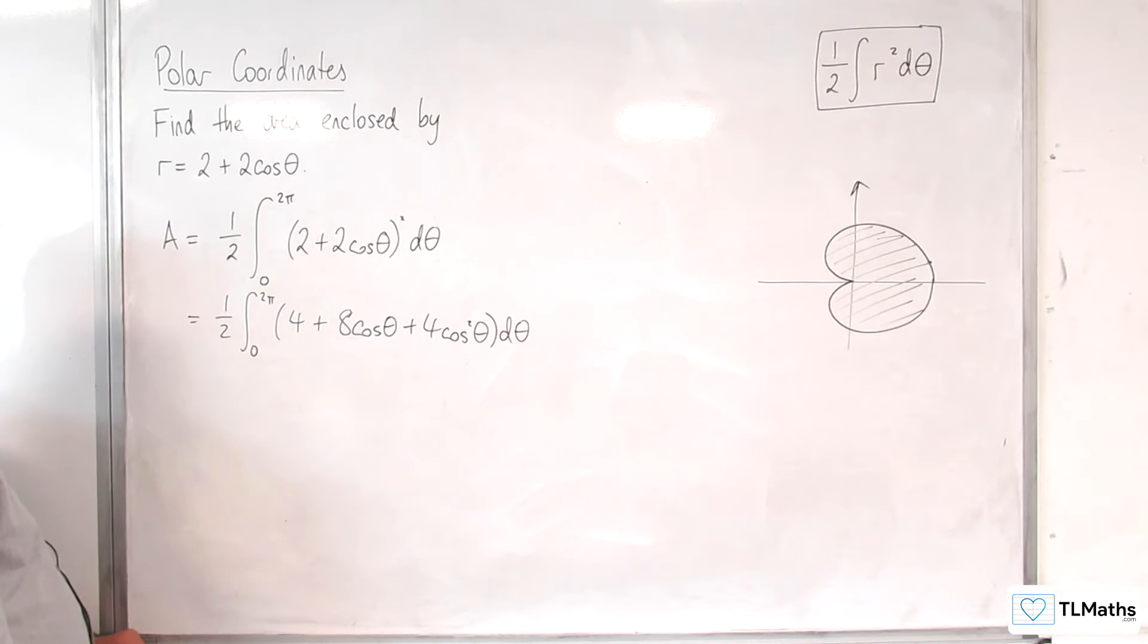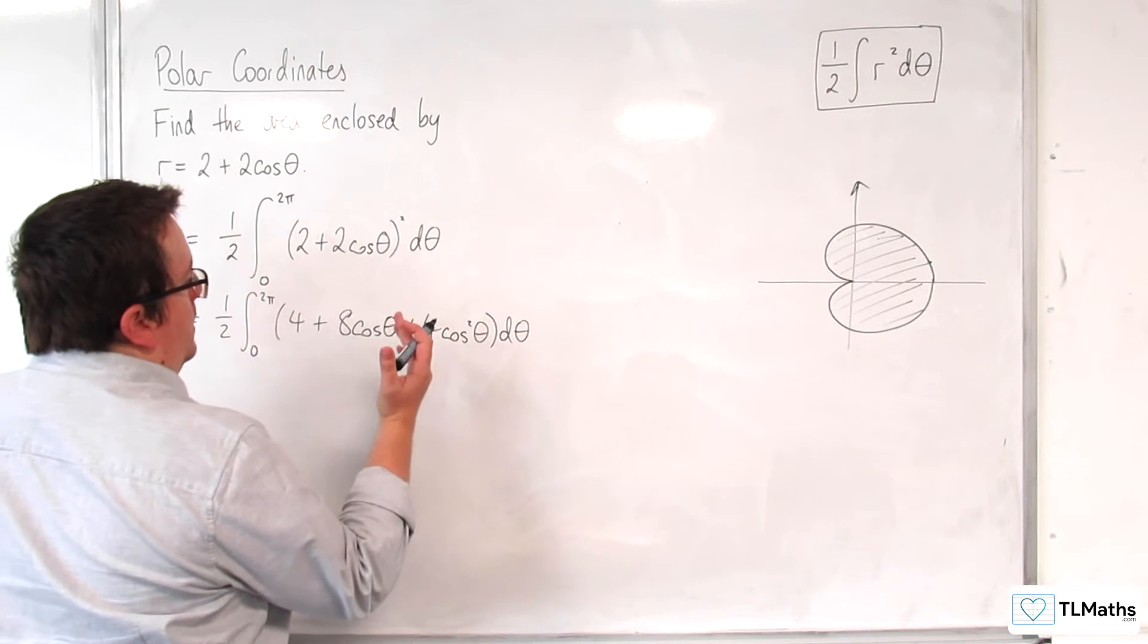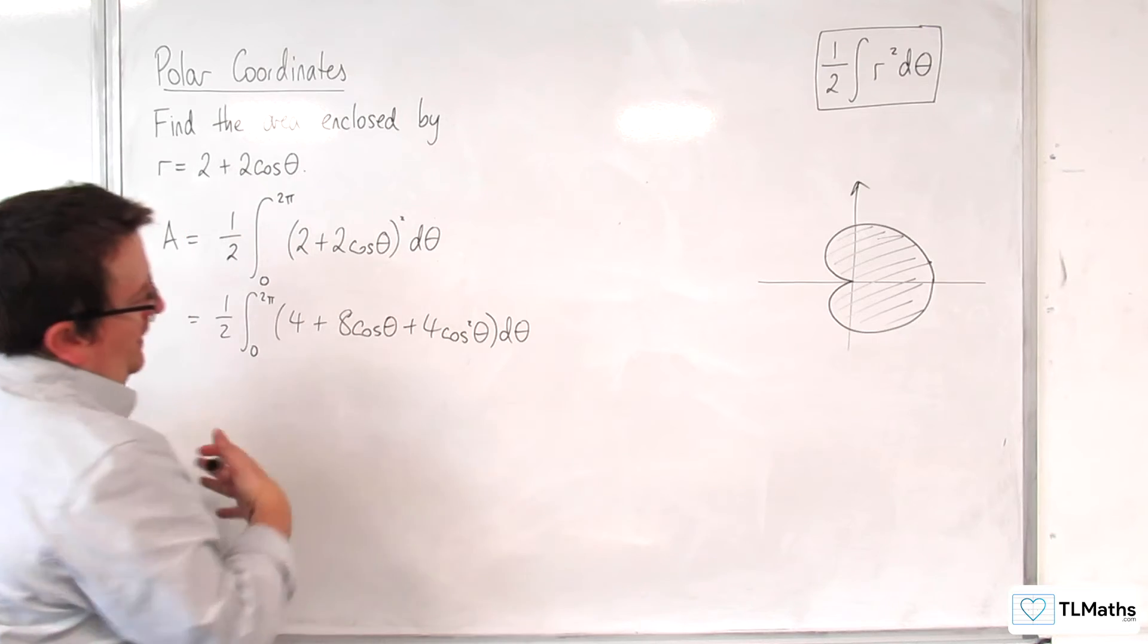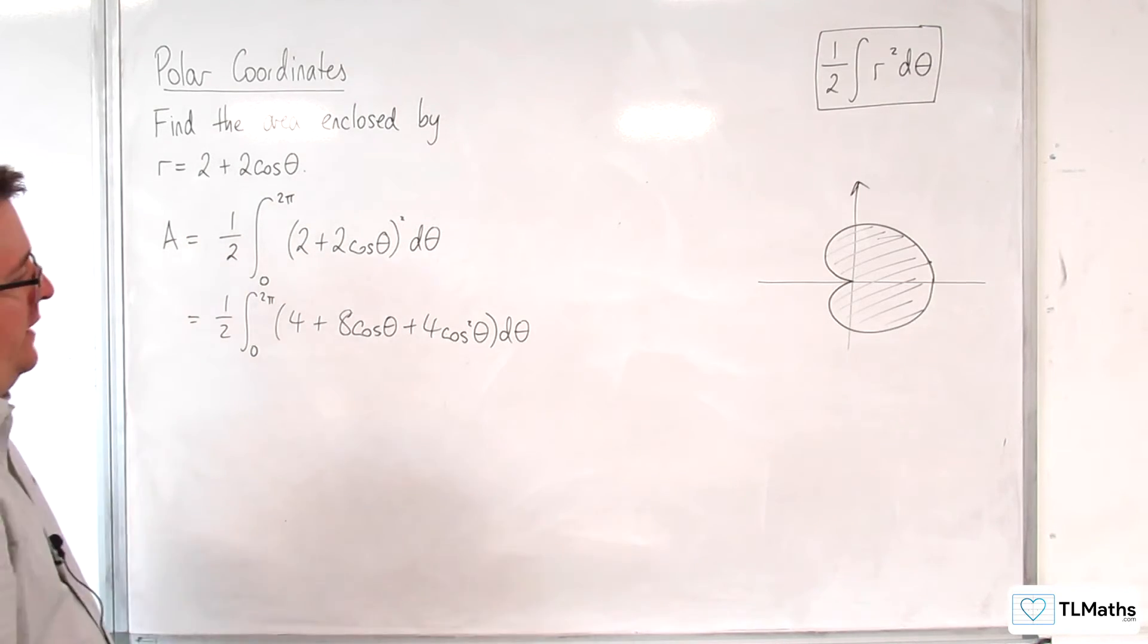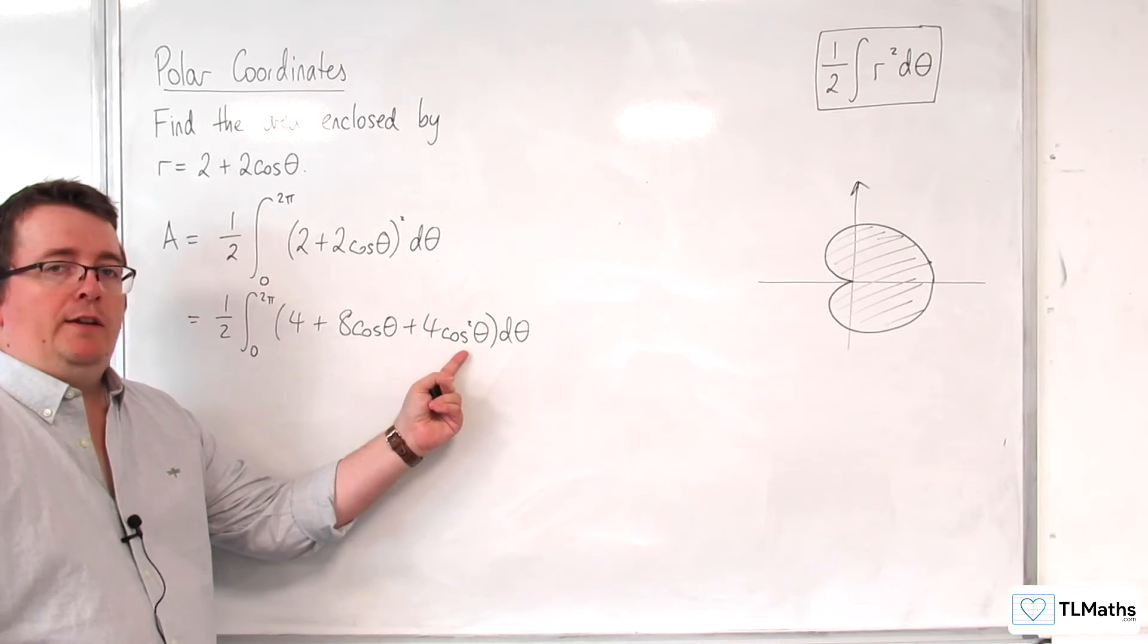Now I could factor the 4 out first, but I think the first thing that I want to do is replace that cosine squared.